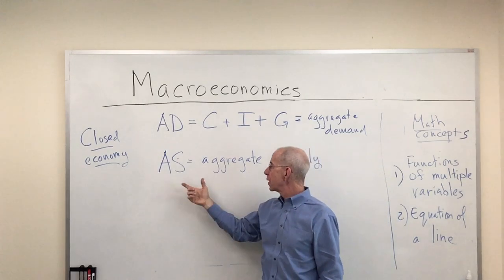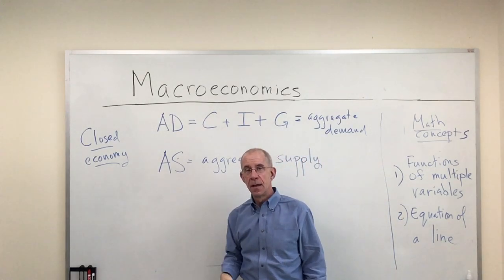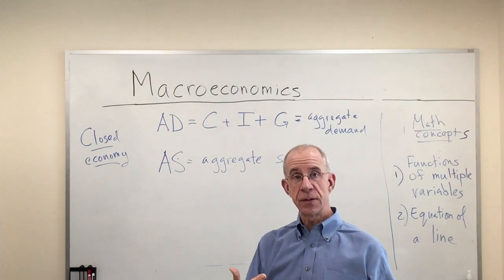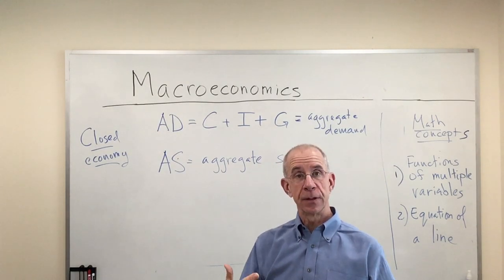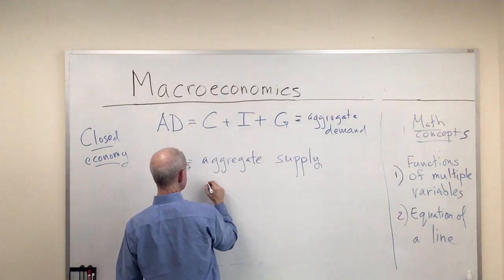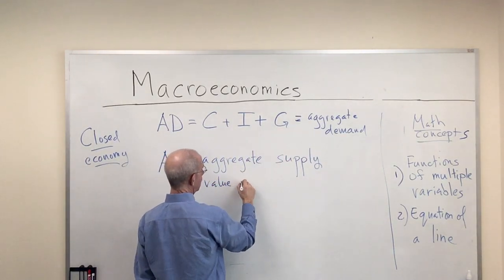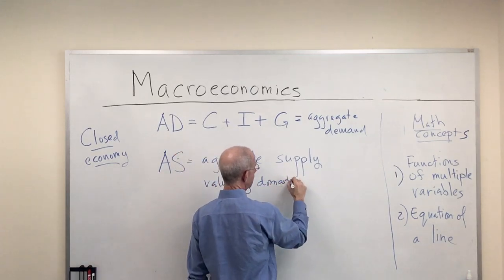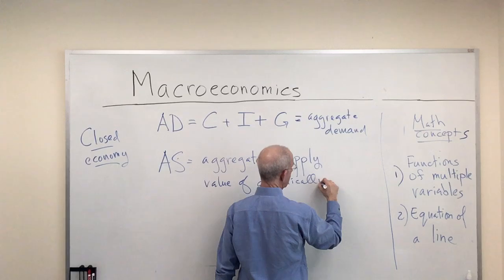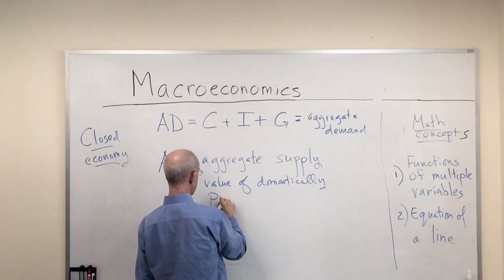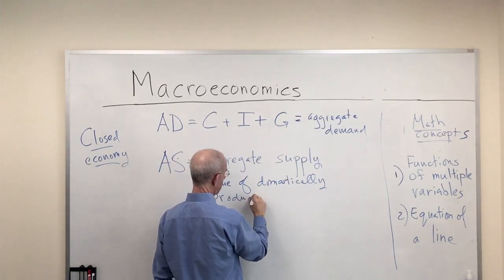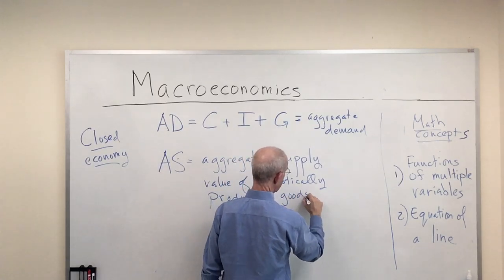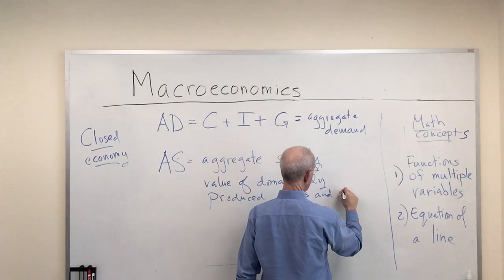And we're going to introduce this idea of aggregate supply. This is the value of goods and services actually produced. So this is the value of domestically produced goods and services.